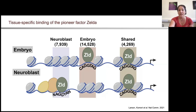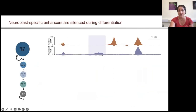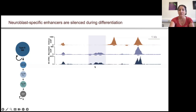We wanted to ask what is happening at these enhancers as the cells differentiate from that neuroblast into the INP. Here I'm showing you one enhancer we identified for a master regulator of stem cell fate, talus. ChIP-seq shows Zelda binding in the neuroblast as compared to the embryo, with two different enhancers. When we look at chromatin accessibility, indeed these enhancers are open and accessible in the neural stem cells.